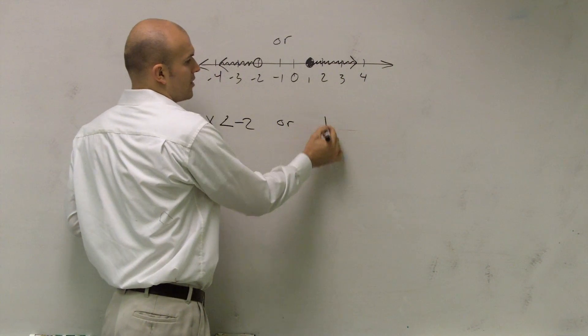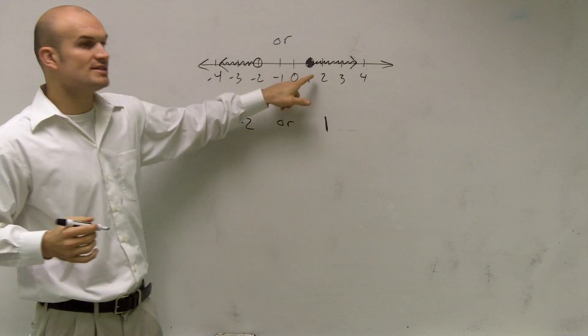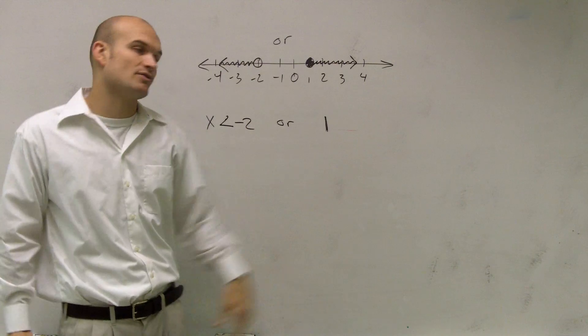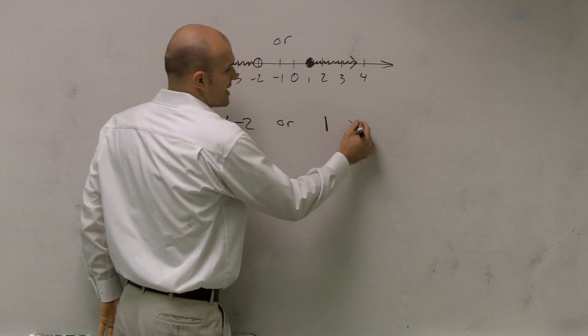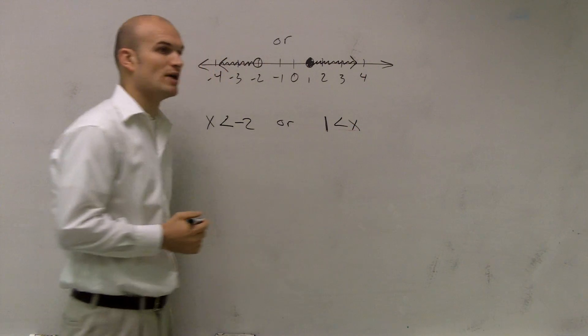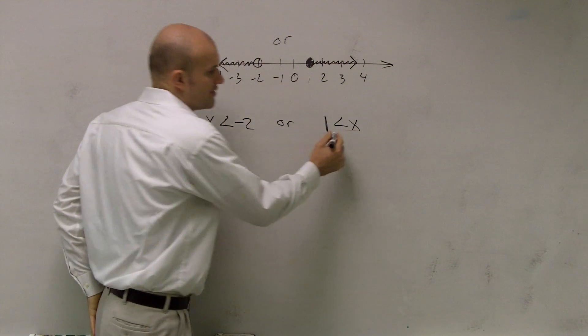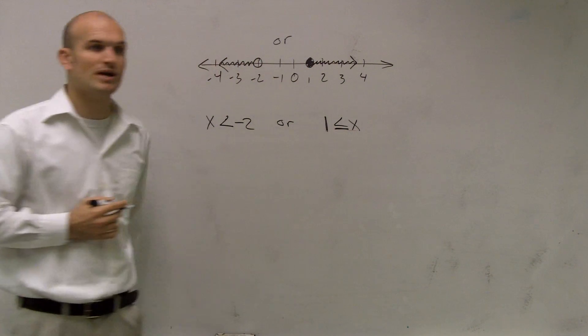Or so now, if I have my one here, well, this says all numbers that are greater than one, right? x represents all numbers that are greater than one. So we can say x is going to be all numbers that are greater than, but notice that my circle is also filled in. So therefore, it's going to be all numbers that are greater than or equal to.